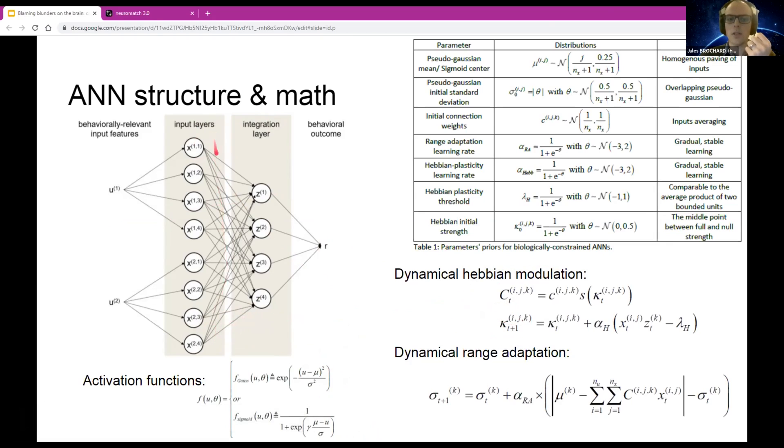And then you can also add the Hebbian modulation of the weight between the two layers or a dynamical range adaptation of the sensitivity parameter of this second layer.